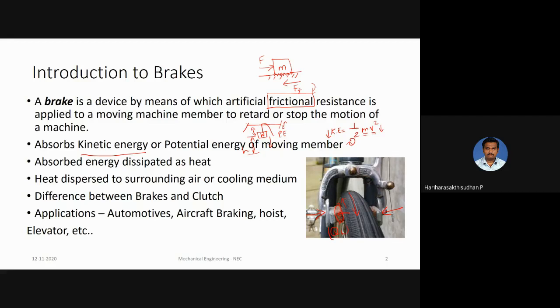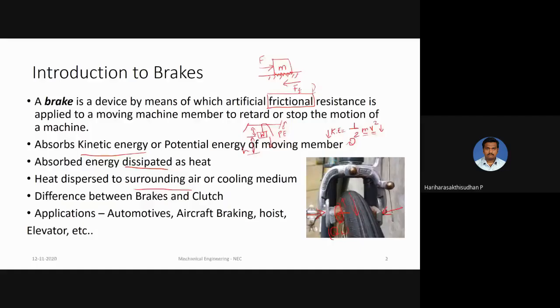When the wheel is moving at some velocity and you apply the brake, a magnitude of heat is produced due to friction. This heat is then dissipated to the surrounding atmosphere — air is one of the cooling mediums. In some cases there may be other cooling mediums through which heat is dissipated. So kinetic energy is converted into heat energy, and the heat energy is dissipated to the surroundings. This is how the brake absorbs and dissipates energy.